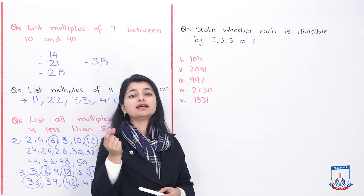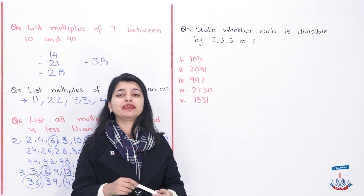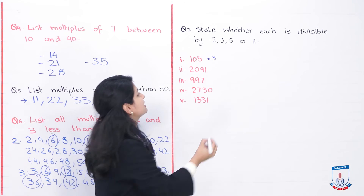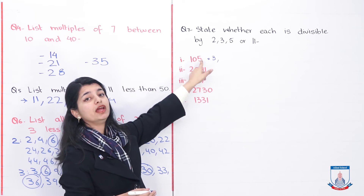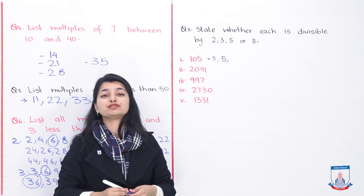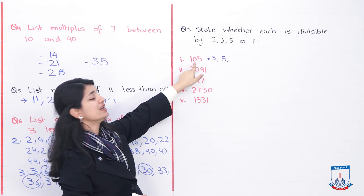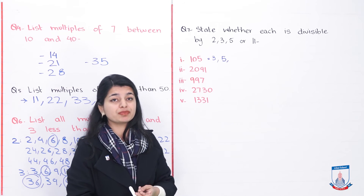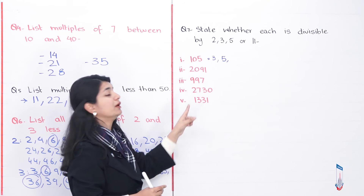Check divisibility of 105 by 3: look at the digit sum — 1 plus 0 plus 5 is 6. Is 6 divisible by 3? Yes, 6 divided by 3 equals 2, so 105 is divisible by 3. Check by 5: 105 ends in 5, and any number ending in 5 or 0 is divisible by 5, so yes. Check by 11: the alternating sum is 1 plus 5 minus 0 equals 6. Since 6 is neither 0 nor a multiple of 11, this is not divisible by 11.